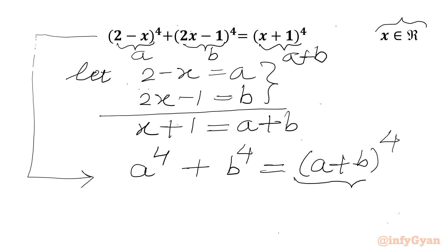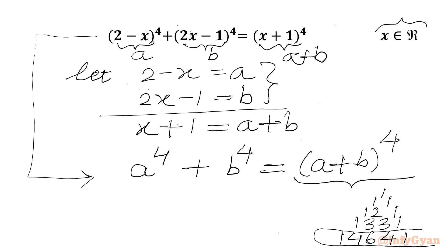Now I have to expand the right-hand side using Pascal's triangle and binomial expansion. Let us check the coefficients for power 4. For power 1: 1, 1. For power 2: 1, 2, 1. For power 3: 1, 3, 3, 1. And for this problem, power 4: 1, 4, 6, 4, 1. We will use these numbers as expansion coefficients.